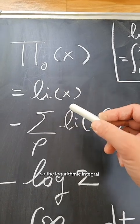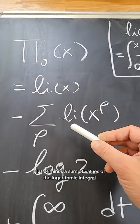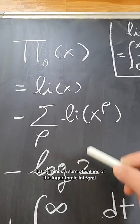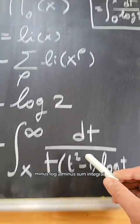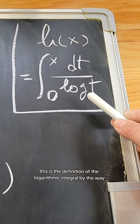So the logarithmic integral plus or minus a sum of values of the logarithmic integral minus log 2 minus some integral. This is the definition of the logarithmic integral, by the way.